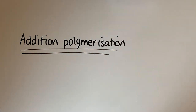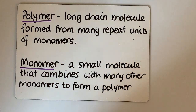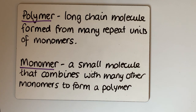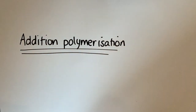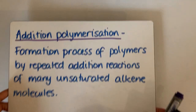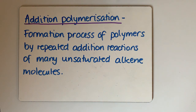First things first, we need to know a couple of definitions. A polymer is a long chain molecule and it's formed from many repeat units of monomers — polymers are made up of lots of monomers. A monomer is a small molecule that combines with many other monomers to form a polymer. When it comes to addition polymerization, it is the formation process of polymers by repeated addition reactions of many alkene molecules.